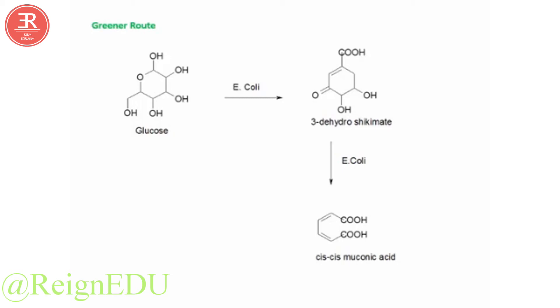The structure of cis-cis-muconic acid is very close to adipic acid. Hence, it is treated with hydrogen and the reduction process is carried out in the presence of platinum as a catalyst, and adipic acid is formed.